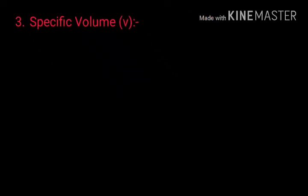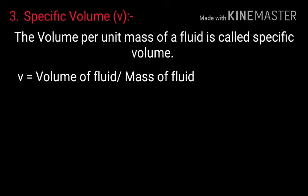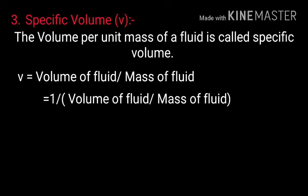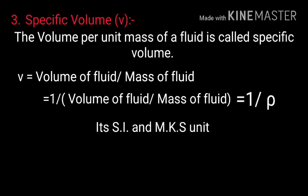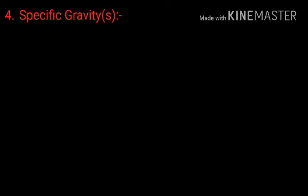Now, specific volume. The total volume per unit mass of the fluid is called specific volume. Therefore, specific volume equals to total volume of the fluid by mass of the fluid, which equals to 1/ρ. Its SI and MKS unit is meter cube per kg, and CGS unit is centimeter cube per gram.